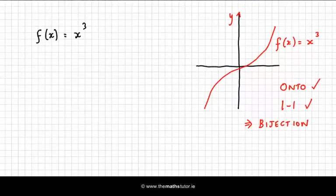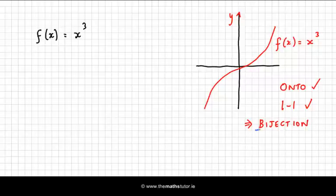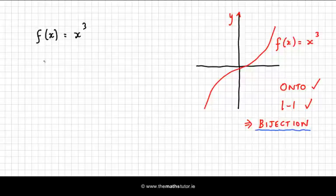Now, in the case where we have actually found a bijective function, we know that it's invertible. So how do we actually find the inverse? Well, the way to do it is this: write your function as y equal to x cubed, so express y in terms of x.